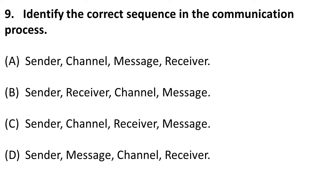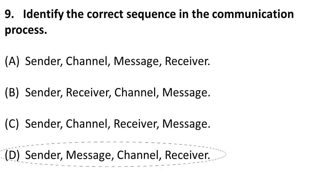The next question is: identify the correct sequence in communication. From the previous questions, you might have gotten the idea. The correct sequence is: first the sender gives a message through a channel to the receiver. So the correct answer here is D. Note: I had wrongly marked A, but the correct answer is D. Remember — the correct sequence is sender, message, channel, and receiver.